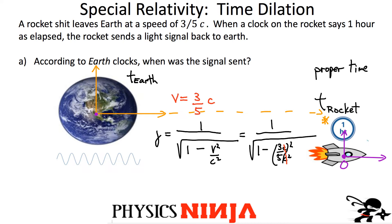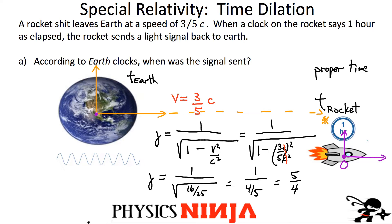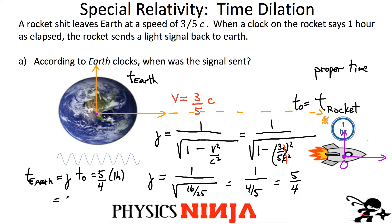Squaring three-fifths gives 9 over 25. So the term inside the square root is 25/25 minus 9/25, which leaves 16 over 25. That gives 1 over (4/5), which means the gamma factor is 5 over 4. So if the proper time is T₀, the dilated time — the time measured by Earth — is simply γ × T₀ = (5/4) × 1 hour = 5/4 hours, or 75 minutes.